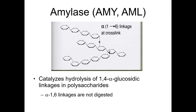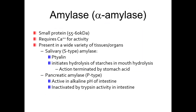Amylase digests carbohydrates. It is a small protein that requires calcium for its activity and is present in a wide variety of tissues and organs. There is a salivary amylase and a pancreatic amylase. Pancreatic amylase is inactivated by trypsin activity in the intestine and is active at the alkaline pH of the intestine.